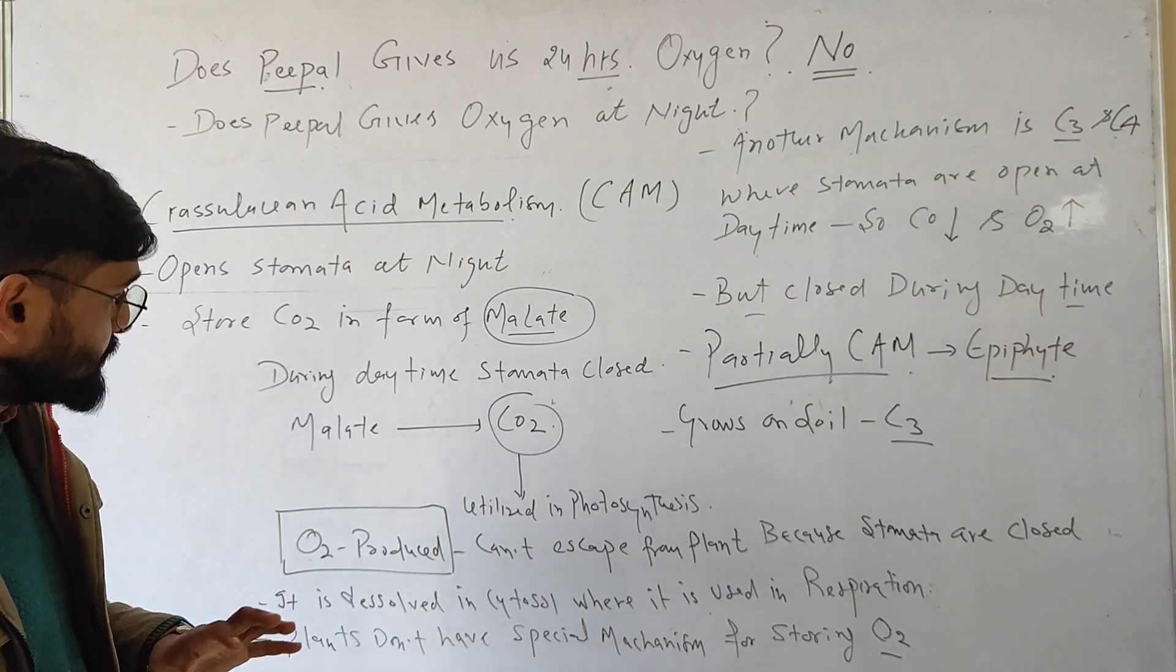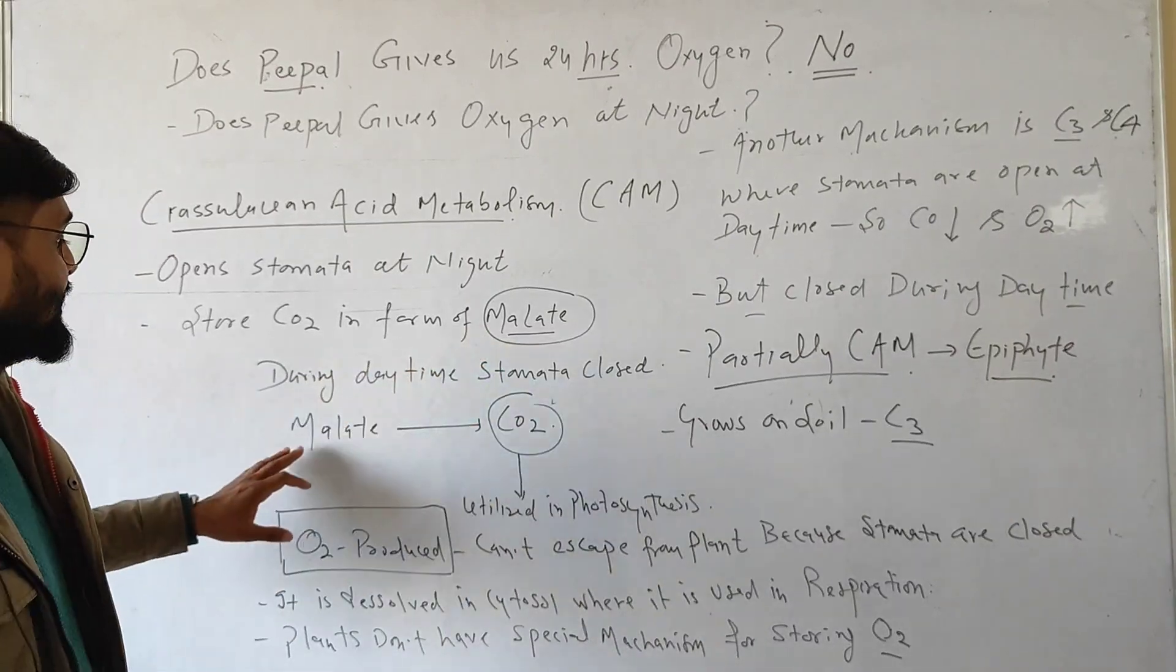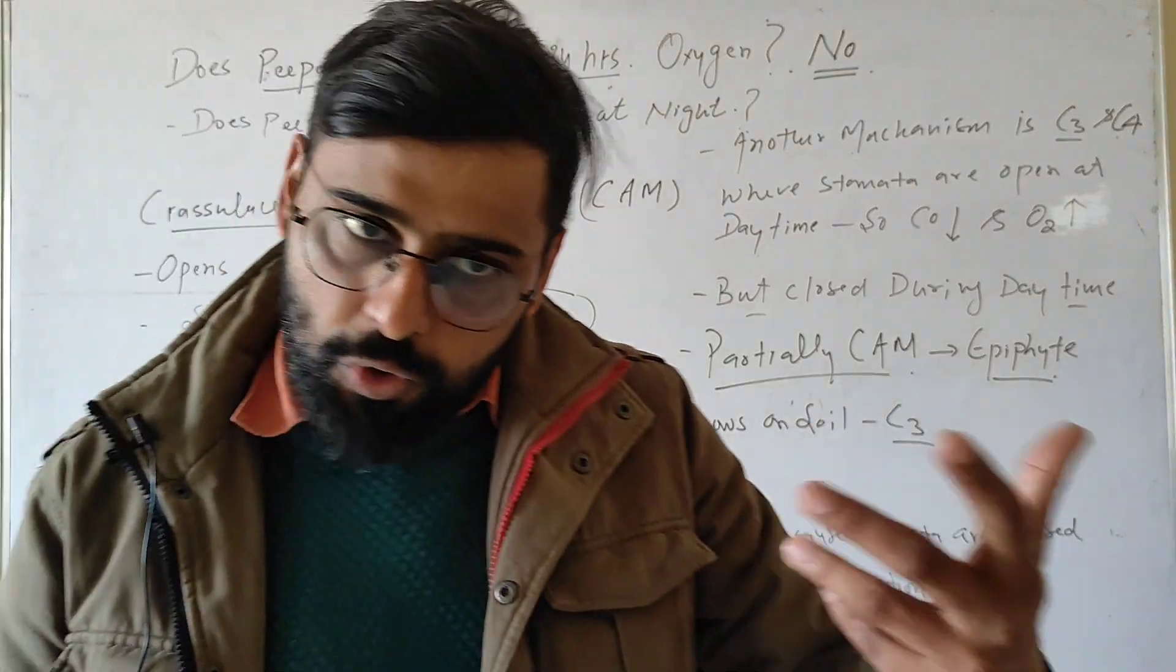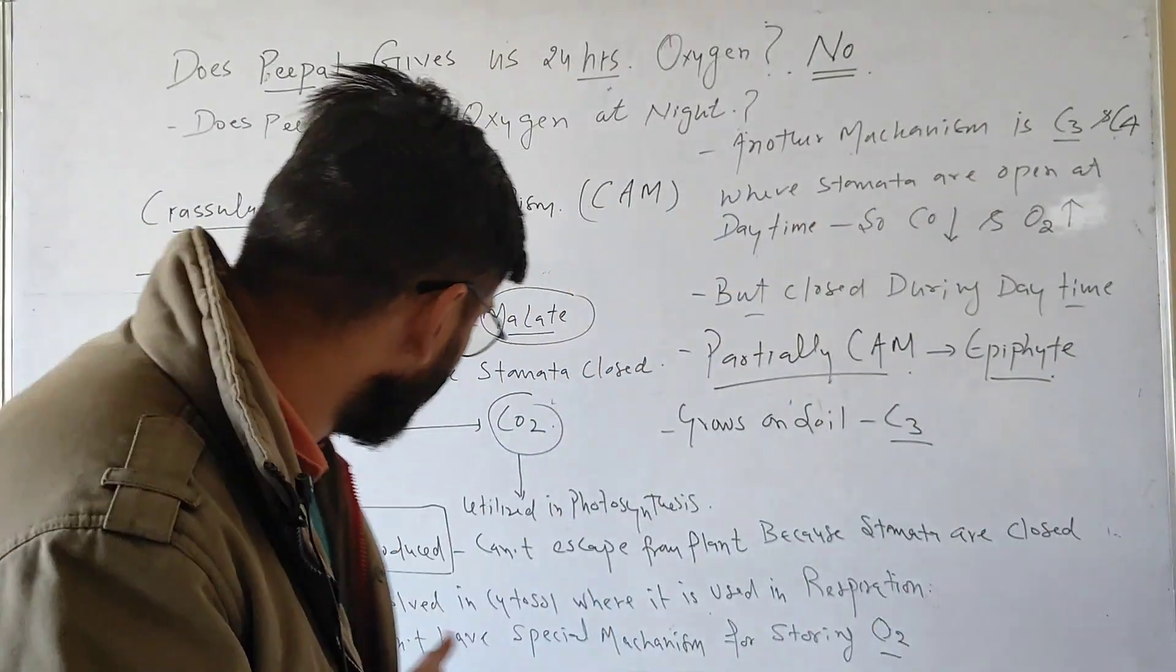During the daytime, when light is present, this malate is broken down and it will release CO2. So this CO2 is used during photosynthesis and oxygen is released during daytime.